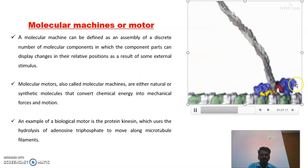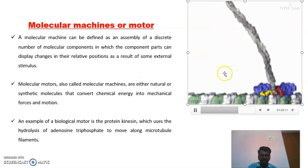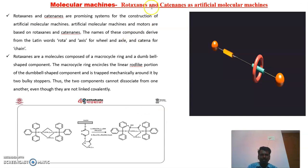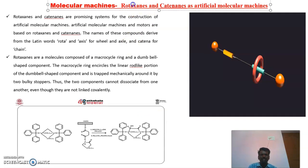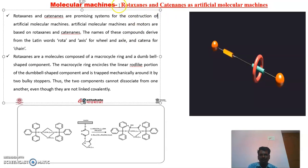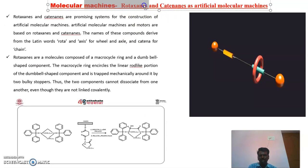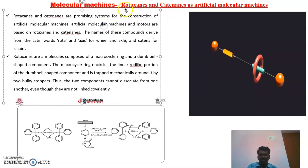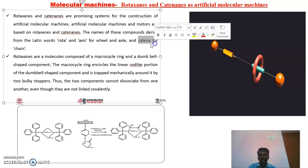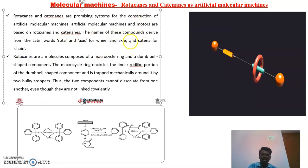This is called a molecular machine or molecular motor. Next, we are going to discuss rotaxanes and catenanes. The name 'rotaxane' implies rota-axis — meaning wheels and axles. 'Catena' means chain. These are the important meanings of these terms.